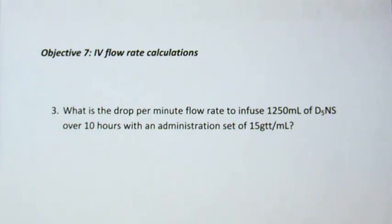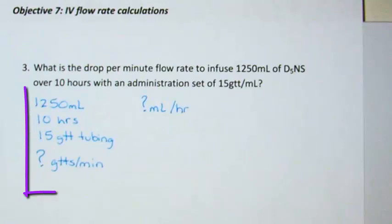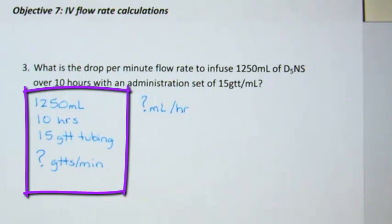Question number 3. What is the drop per minute flow rate to infuse 1,250 milliliters of D5 normal saline over 10 hours with an administration set of 15 drop per milliliter? Our toolbox has 1,250 milliliters, 10 hours, 15 drop tubing, and a question of drop per minute.